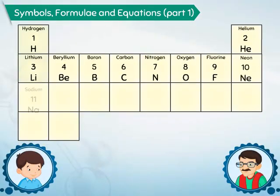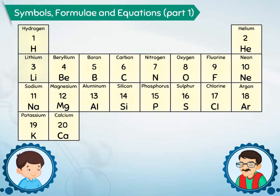And on the basis of their properties, all the elements are arranged in a table called the periodic table. Every element occupies a fixed place in this table.